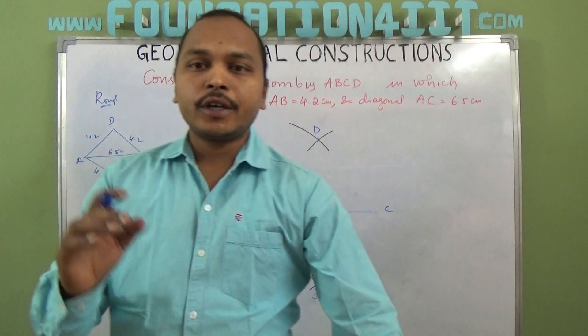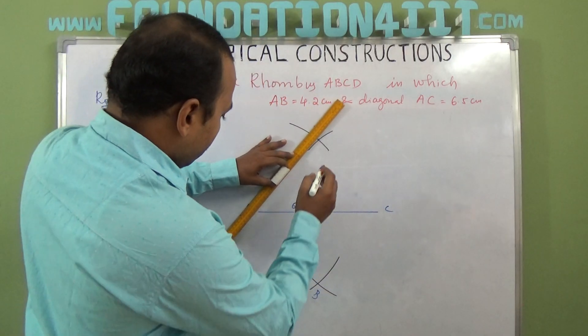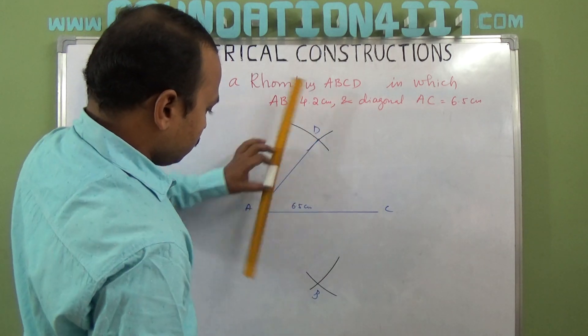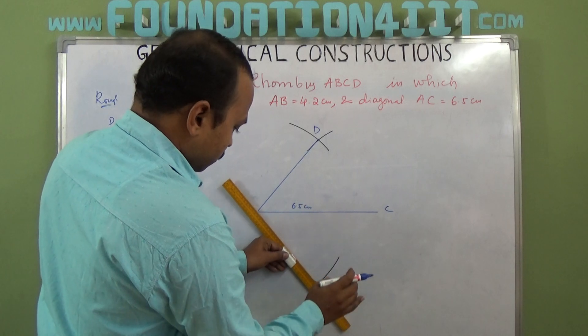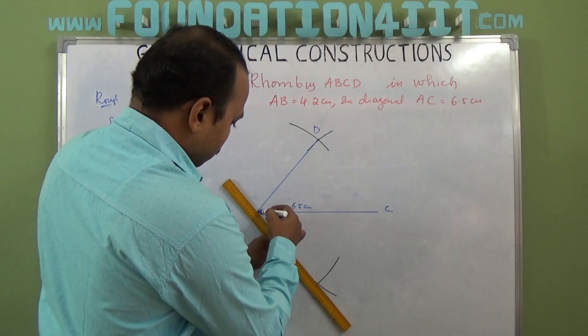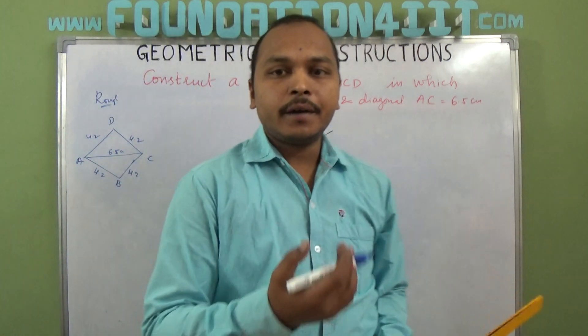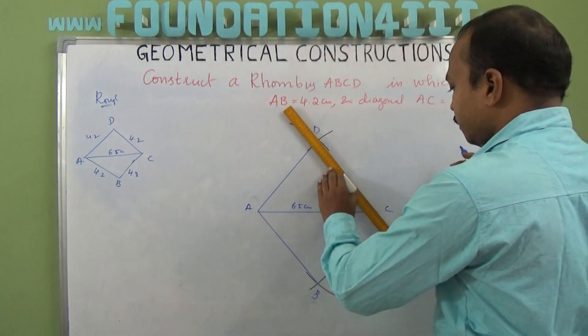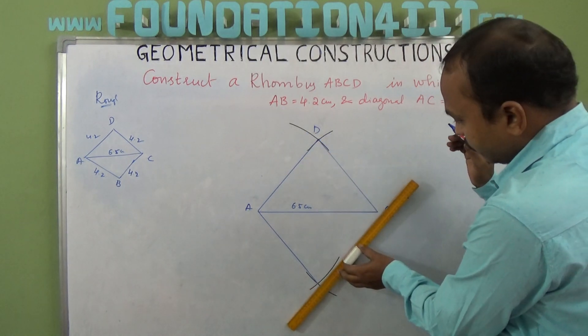Now this is point B and this point is D. Using the scale, join each and every vertex: join A to D, and AB. Similarly, join CD and the other vertices also. Join BC.